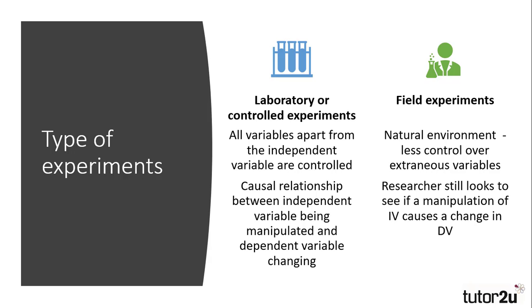The alternative method is a field experiment, which takes place in the research subject's natural environment. This means there is less control over extraneous variables, but it does have higher ecological validity because it is in a natural setting. Researchers will still look to manipulate the independent variable and measure the dependent one. However, this is more likely to produce a correlation between the two variables than a causal relationship, because the researcher cannot be certain that other variables have not influenced the subject's behaviour.